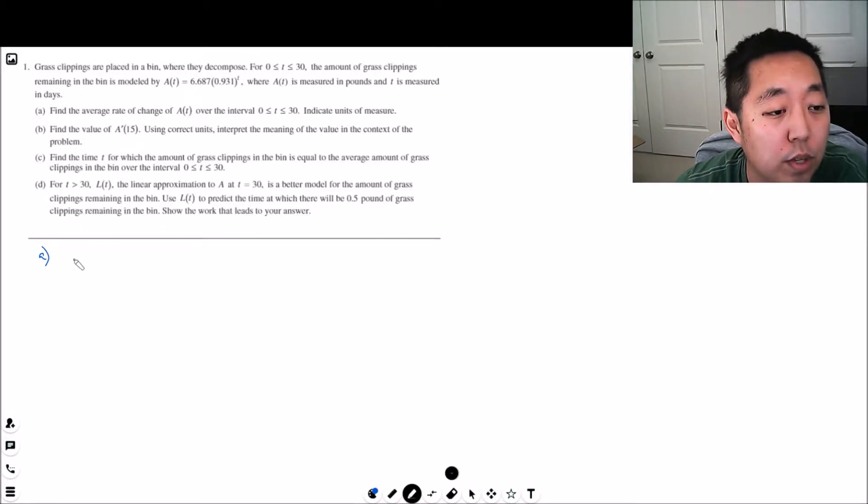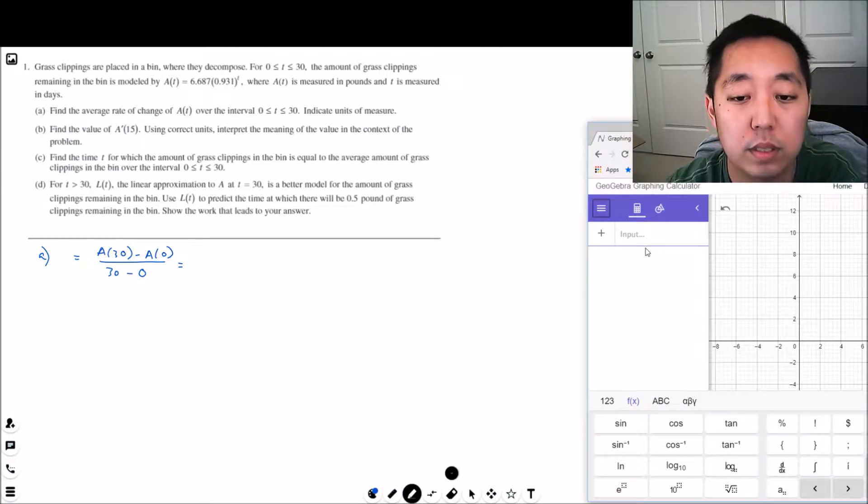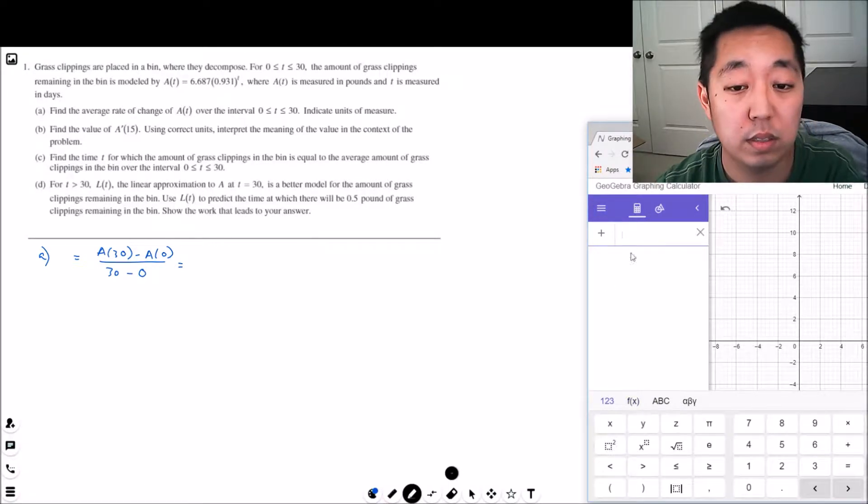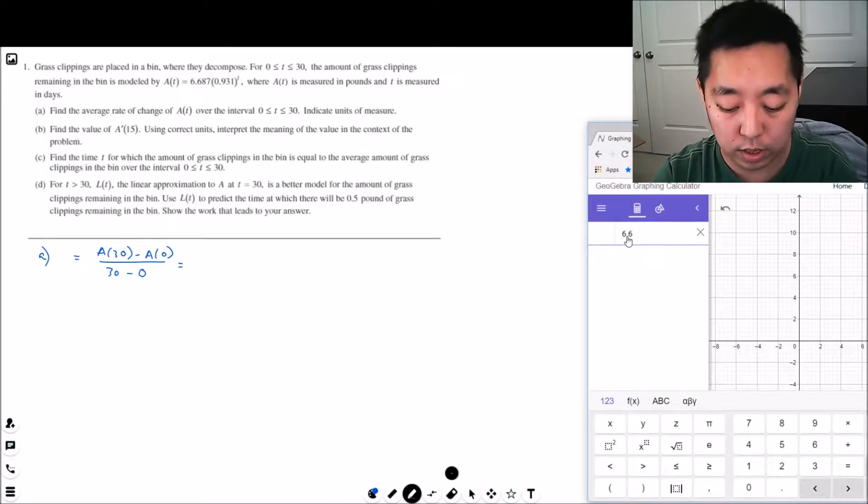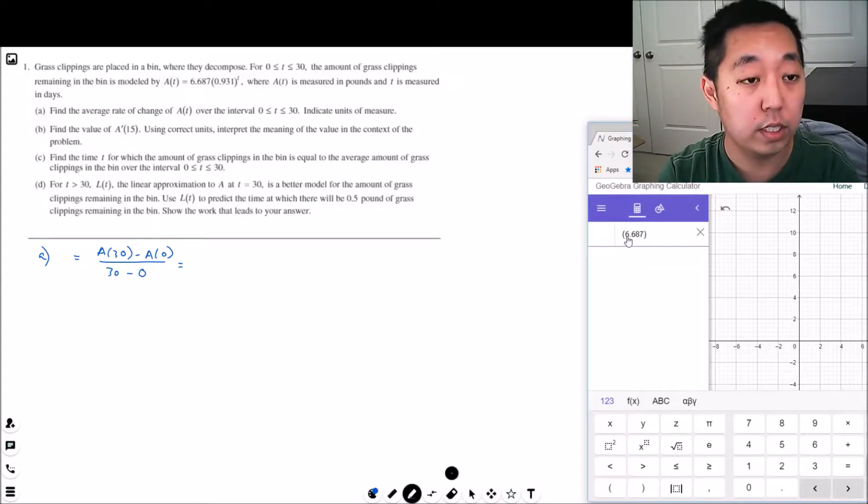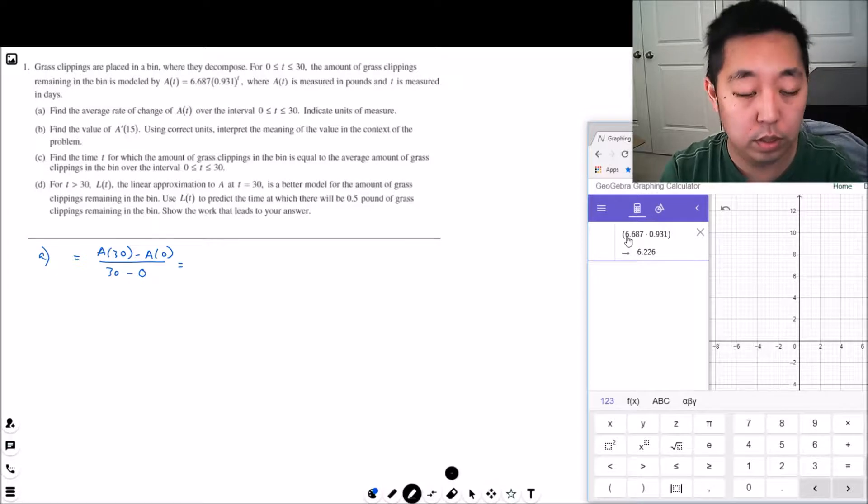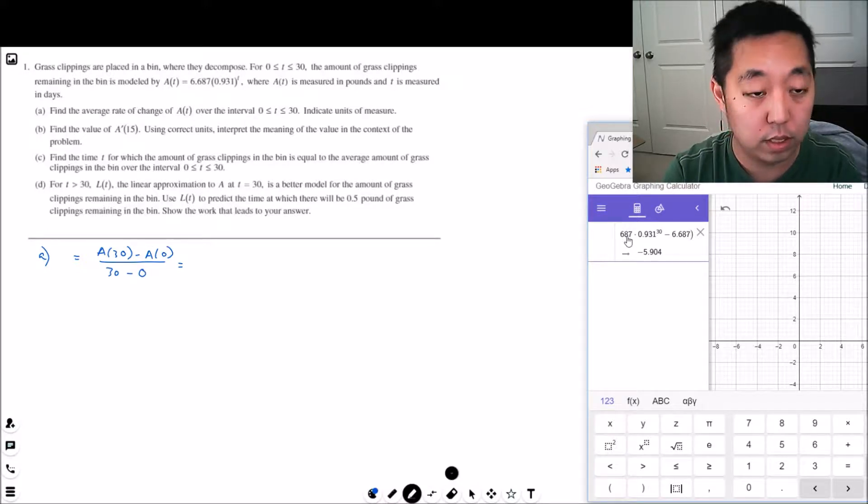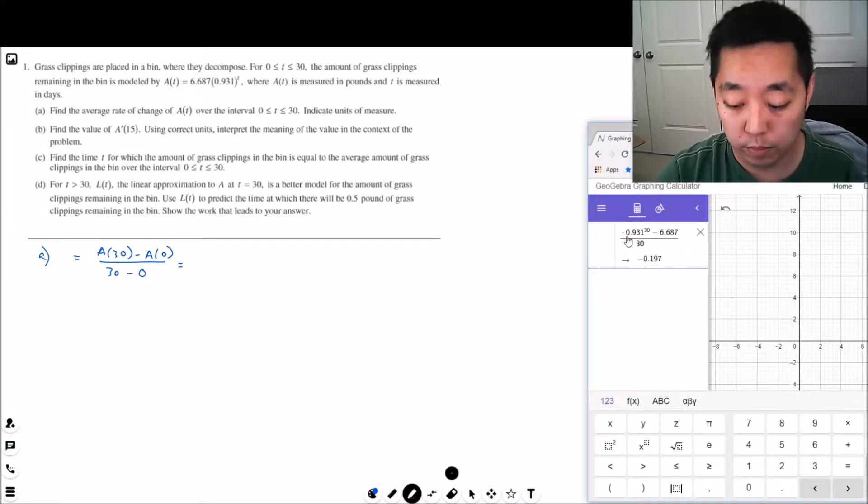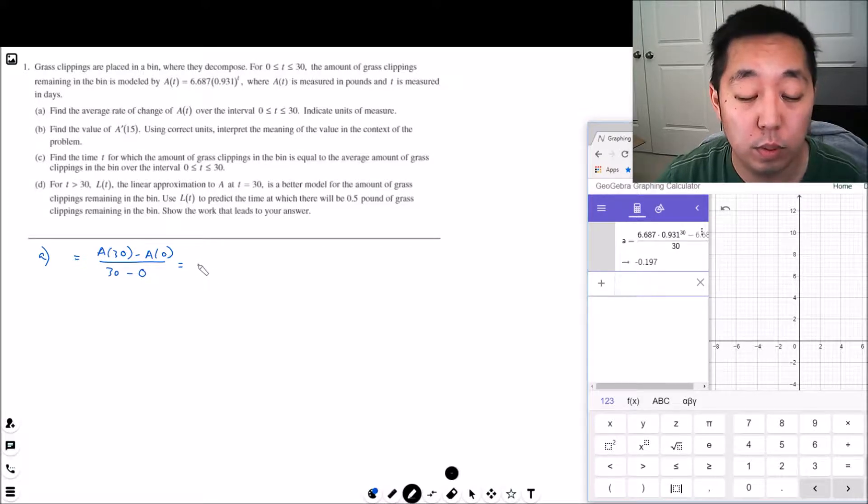The average rate of change would be equal to A(30) minus A(0) over 30 minus 0. That's the secant line slope. So 6.687 times 0.931 raised to the 30th minus 6.687 times 0.931 to the 0, which is just 1, divided by 30. I got negative 0.197.